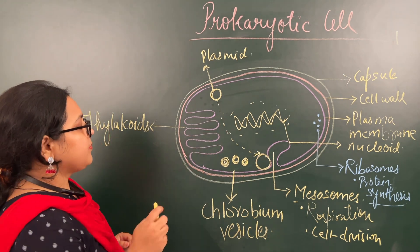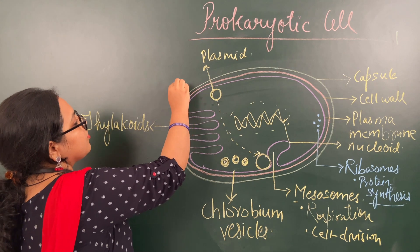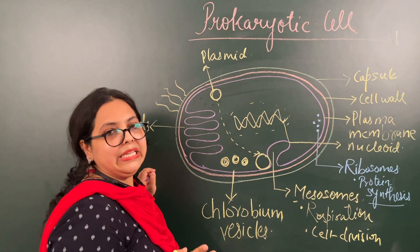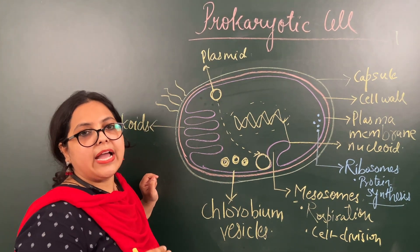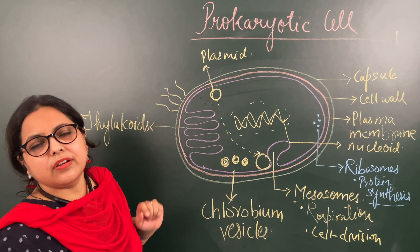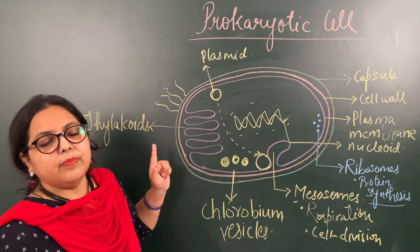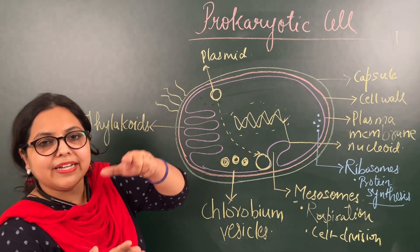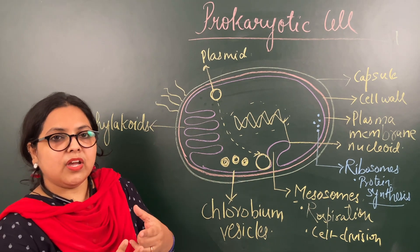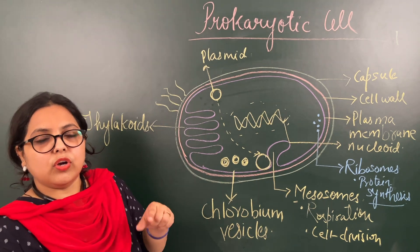Two more things are present on the outer surface of a prokaryotic cell. On the outer surface, hair-like structures are present, and these are called pili — plural of pilus. Many students are confused that pili helps in locomotion, but that is not correct. The hair-like structures are pili, while a slightly thicker structure serves a different function — do not confuse these two.